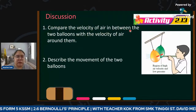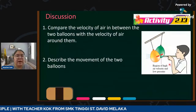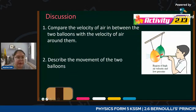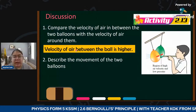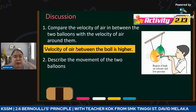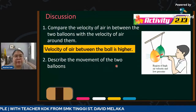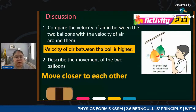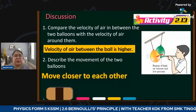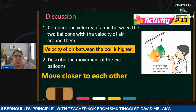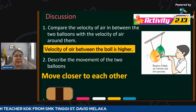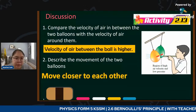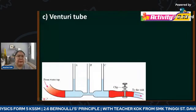The discussion asks you to compare the velocity of air between the two balloons with the velocity of air around them. Between the balloons the air moves very fast, while around them the air velocity is low. The answer: velocity of air between the balls is higher. Therefore the two balls move closer to each other. High speed creates low pressure, and the surrounding atmospheric pressure is higher, producing a resultant force.